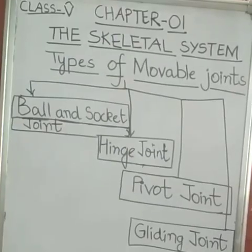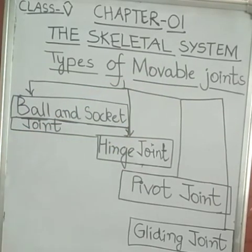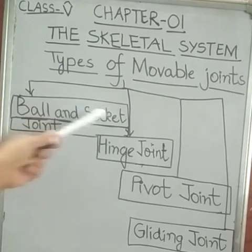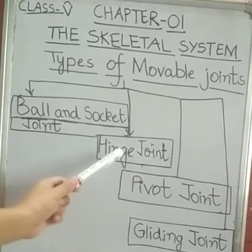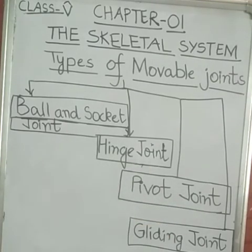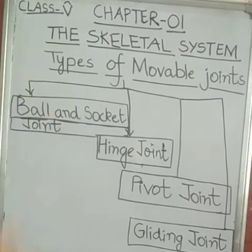Now students, movable joints also have types. There are four types of movable joints: ball and socket joint, hinge joint, pivot joint, and gliding joint. We will learn about these joints one by one.